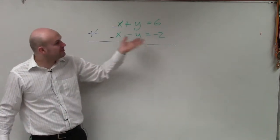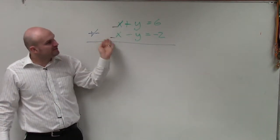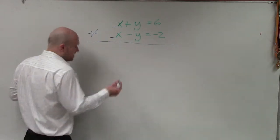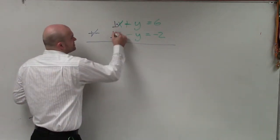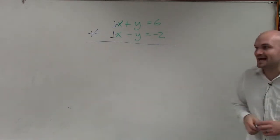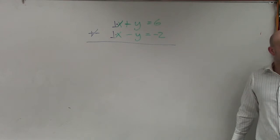The second thing you're going to want to do is make sure that the coefficients of at least one of the variables are exactly the same. And as you guys notice, since these are both x, you can also see that those can be represented as 1x. Does everybody kind of see that and understand that?